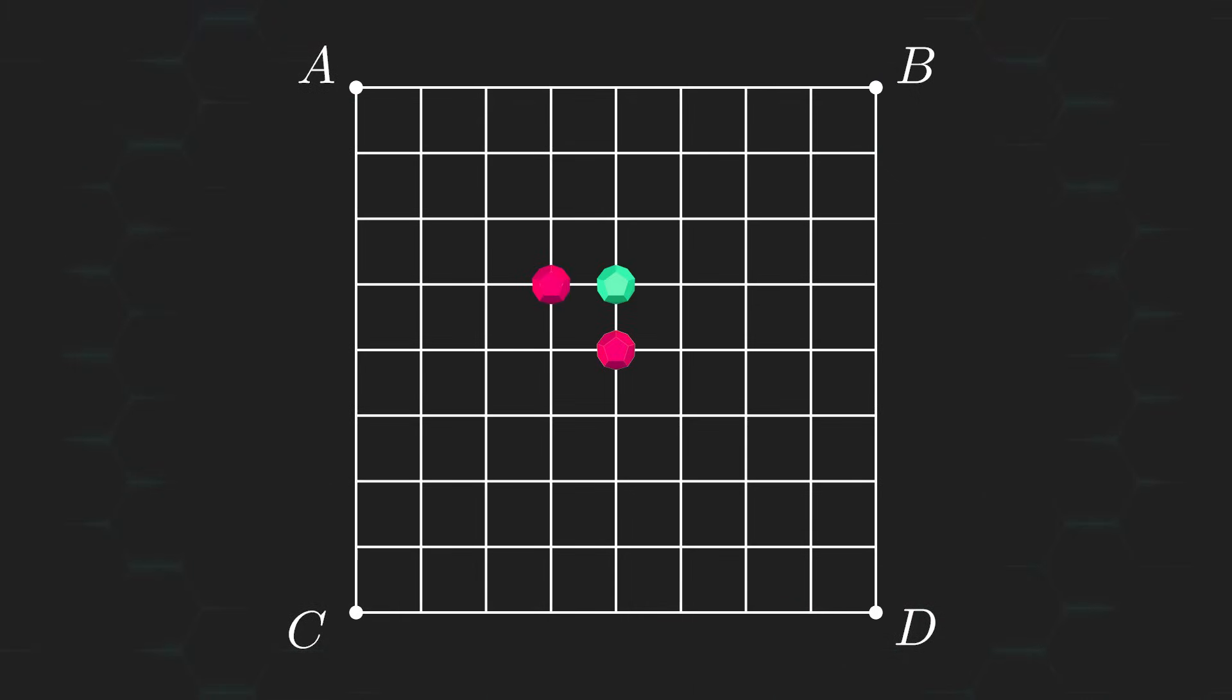Now, notice that on your turn, you can only move the greenstone either up or to the right, both of which bringing you one step closer to corner B. And it doesn't really matter which direction you choose to go in. Because once you make a move, a redstone will be placed on your previous spot, preventing you from moving back in that direction.